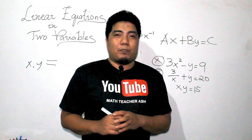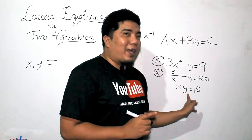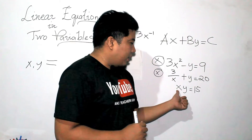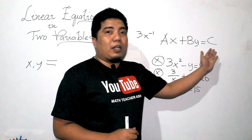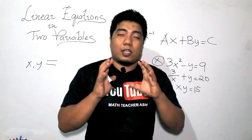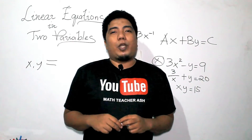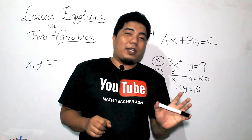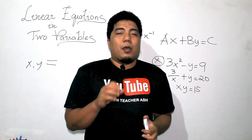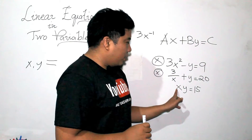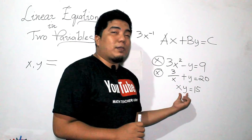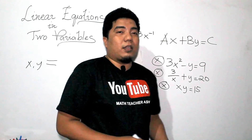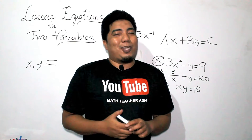For our third non-example, we have xy is equal to 15. x and y are both in the first degree. However, they don't follow our standard form because x and y are considered as one term. In a linear equation in 2 variables, remember that your x term and your y term are separated by either plus or minus. There is no plus or minus here — this is multiplication. Thus, this equation is not a linear equation in two variables.